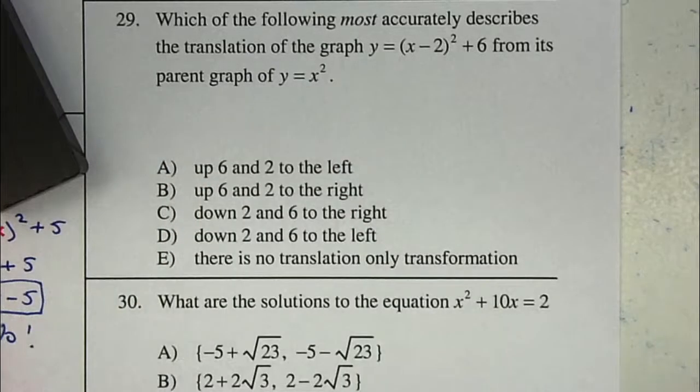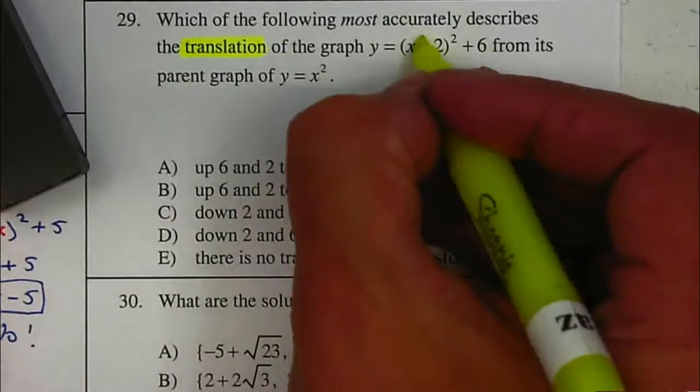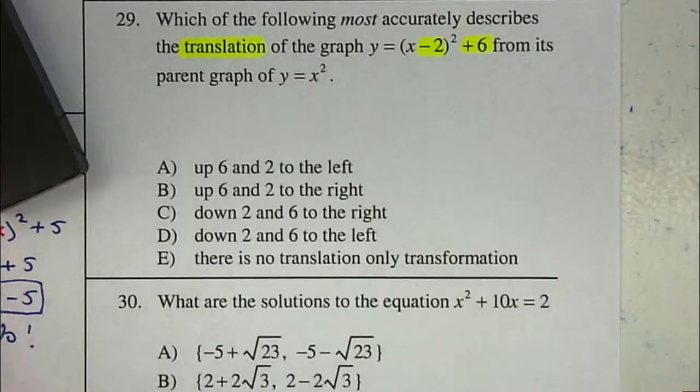In this case, we are looking for a translation. If you notice, we have two translations: the negative 2 and the plus 6. Whenever you have a plus or a minus and they're not multiplying, they are a translation.